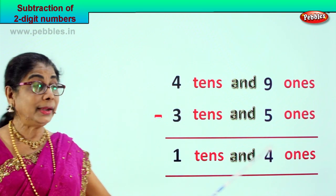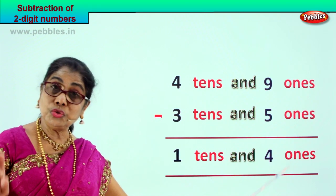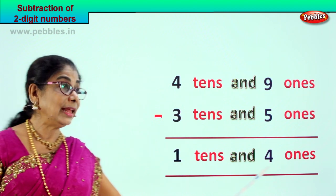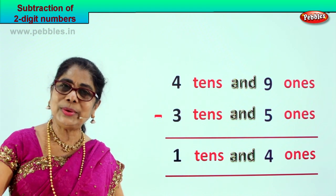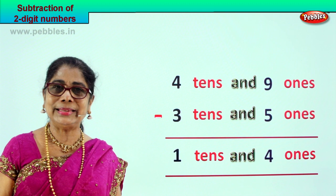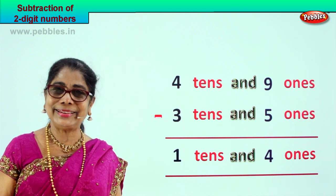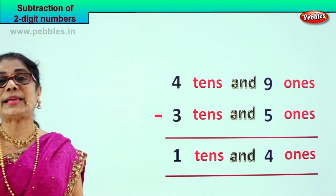4 tens and 9 ones minus 3 tens and 5 ones — your answer is 1 ten and 4 ones. Did you enjoy the 2 digit subtraction? Good, let's take a new sum.